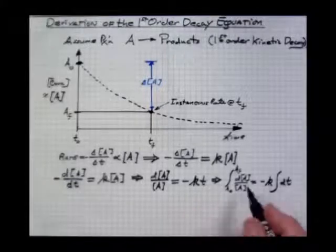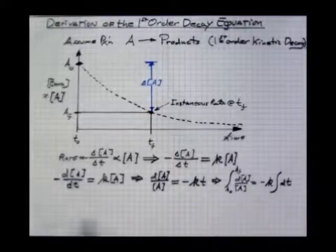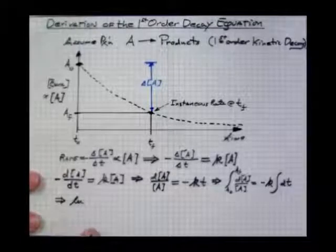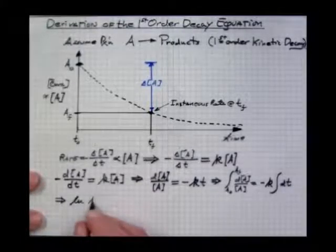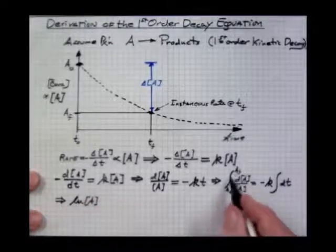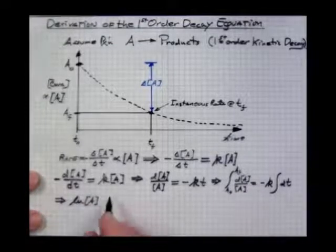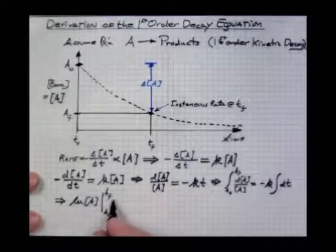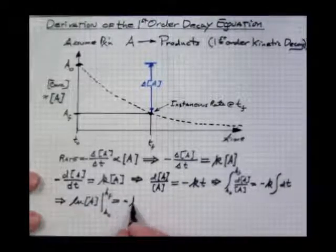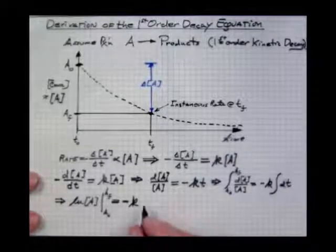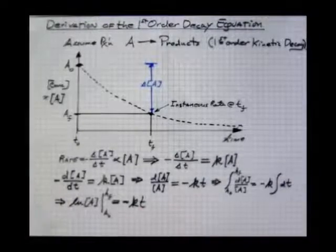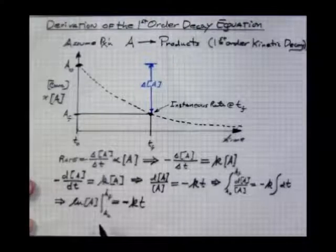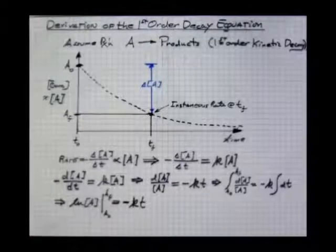Now, the integration of the DA over A is, or leads us to, the natural log of A. Actually, this is integration of 1 over A DA, and we're going to evaluate that from A sub O to A final, and that is going to equal a minus K. Integration of DT is just simply T, like this, and from here, it would be A final minus A sub O, when we evaluate this term.